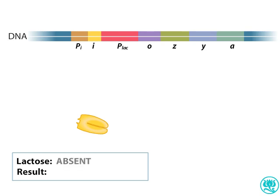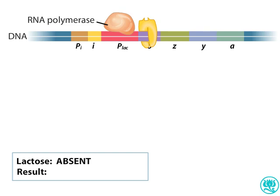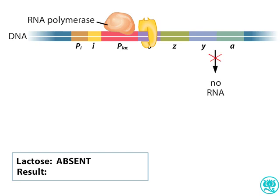In the absence of lactose, the lac repressor binds to the lac operator site. Repressor binding to the operator physically blocks the progression of RNA polymerase. Since RNA polymerase is unable to transcribe the lac structural genes, the corresponding proteins are not made.